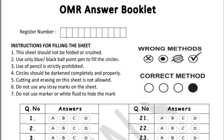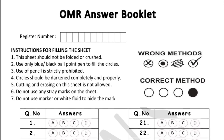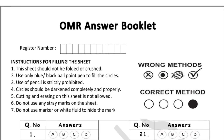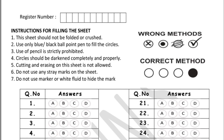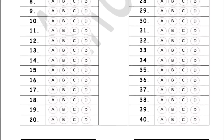You need to write your register number in the space provided and shade it. Instructions: the sheet should not be folded. Use blue or black ballpoint to fill in the shade — use of pencil is not allowed. Circles should be darkened completely. Cutting or erasing on the sheet is not allowed. Do not use it as a rough sheet. Do not use marker or white fluid to hide mistakes.